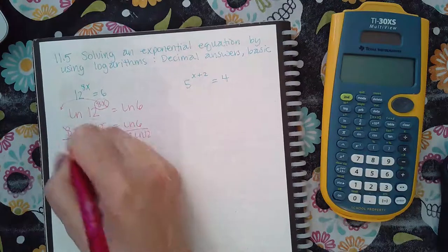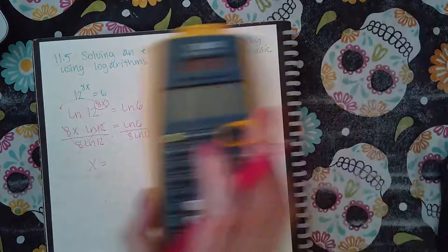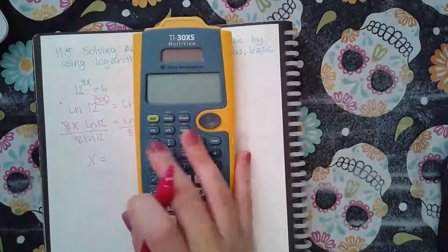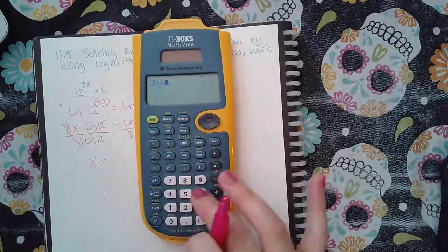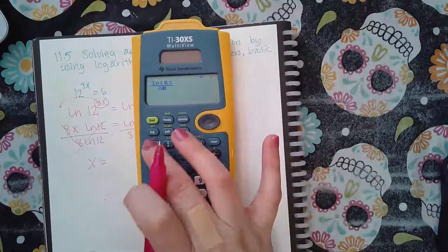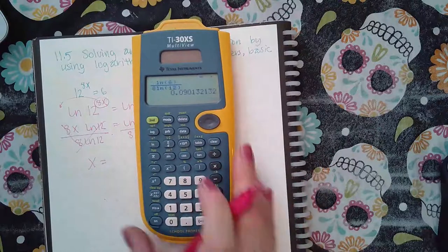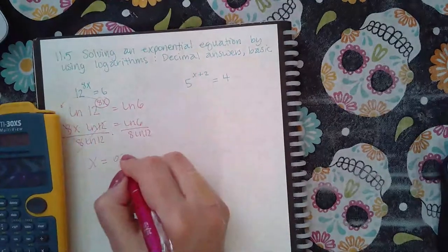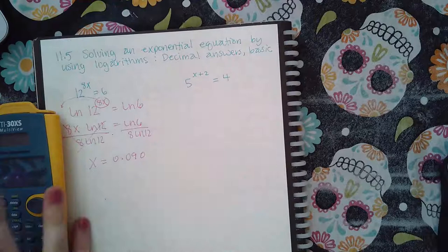And so then this is gone, this is gone, and I get x equal to this expression, and that expression I can type in a calculator. So I get ln of 6 over 8 ln of 12. And it is 0.090.